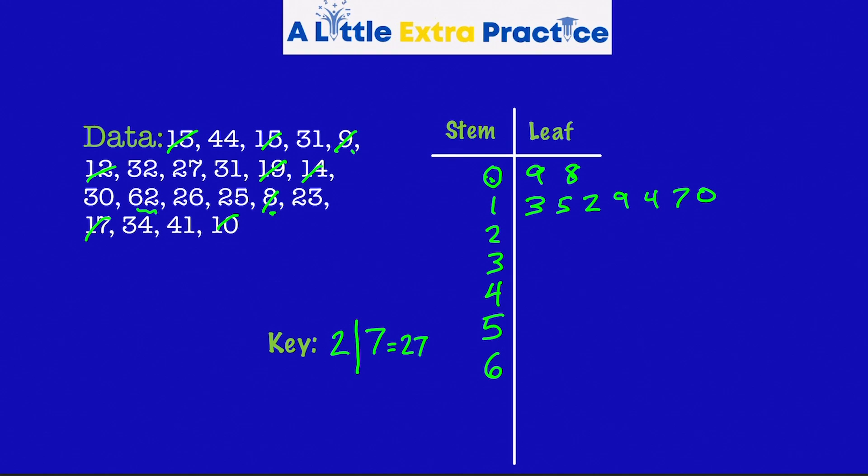Looking at the 20s, 27, 26, 25, 23, and it looks like that's it. 30s. 31, two 31s, 30, 34, 32, and 32. I missed that one. So even though I missed the 32, it's no big deal. I just put it in there at the end. Remember, the leaves do not have to be in order.